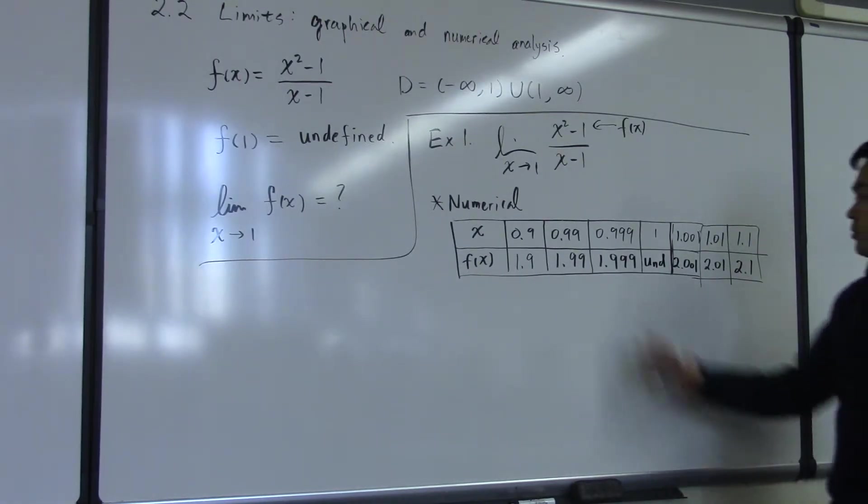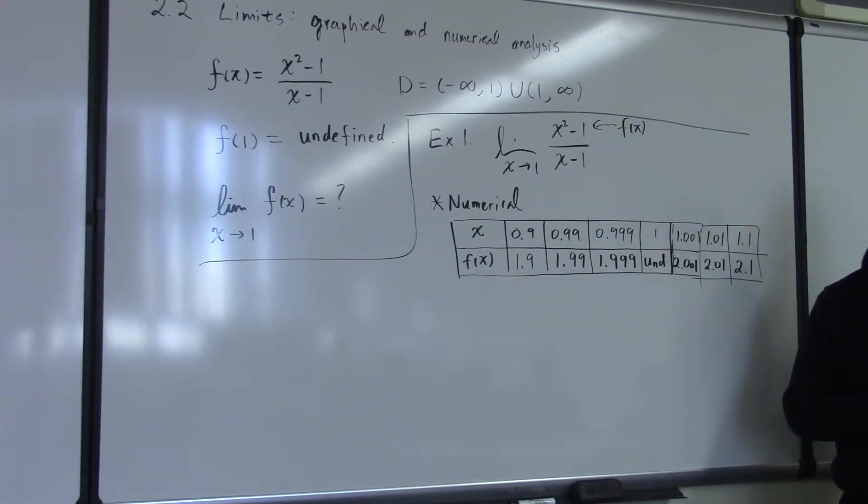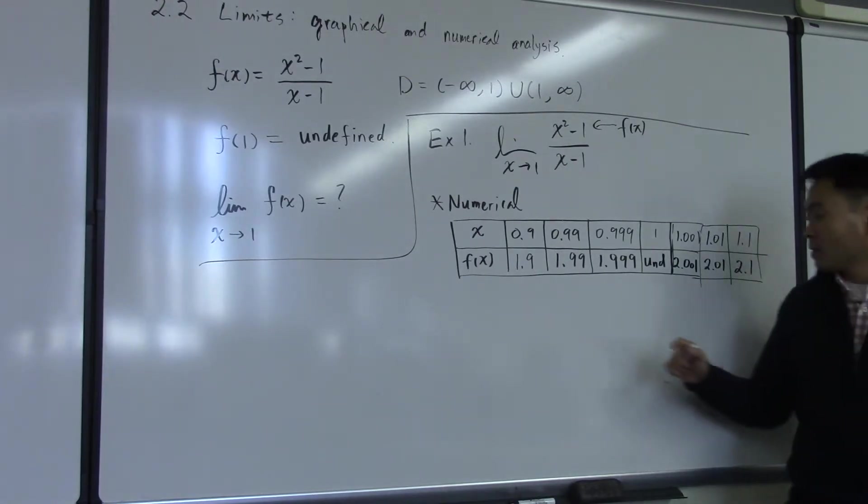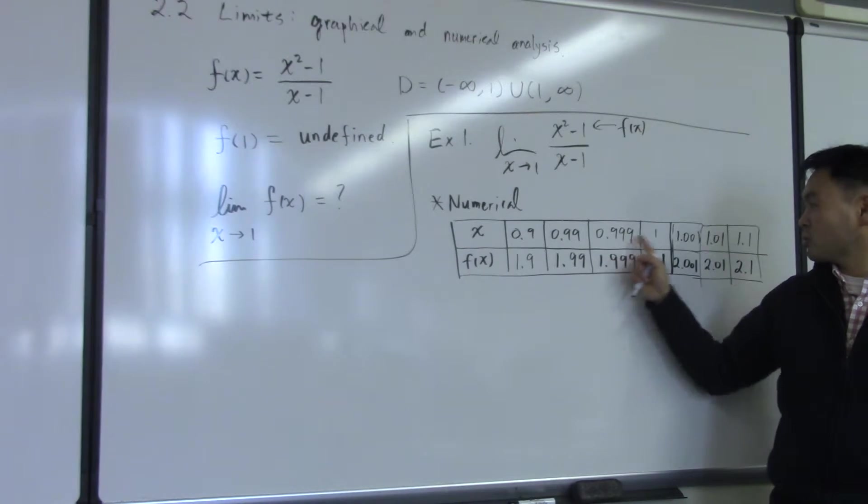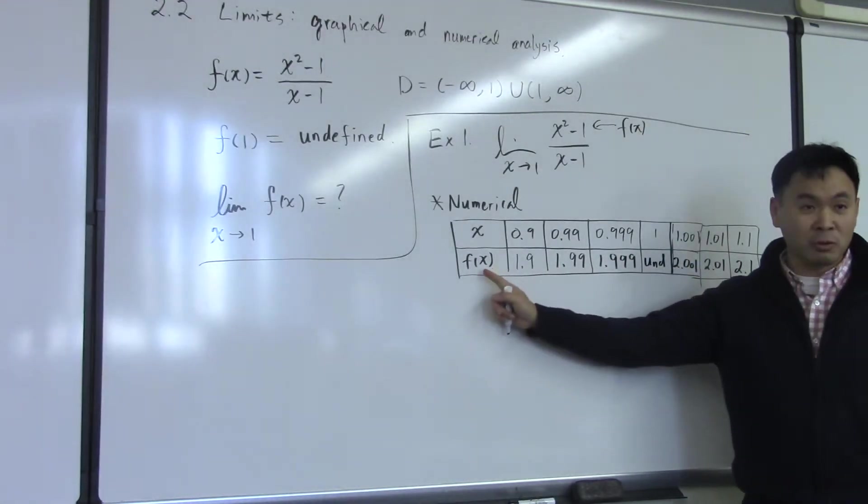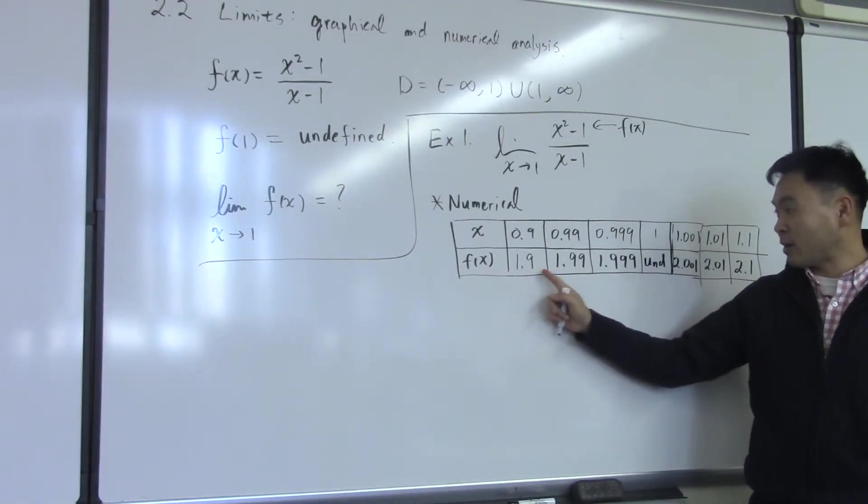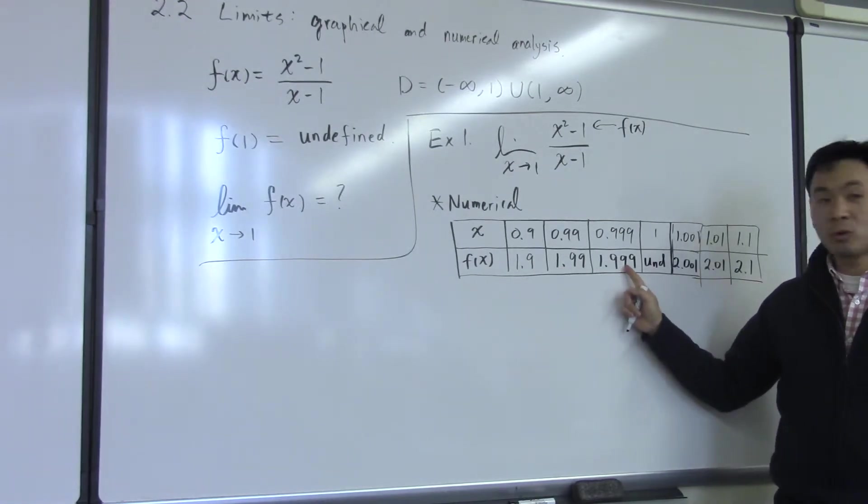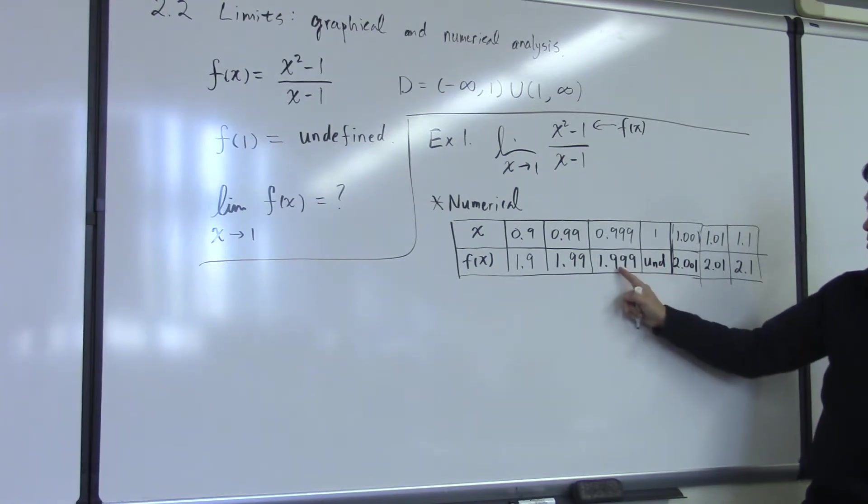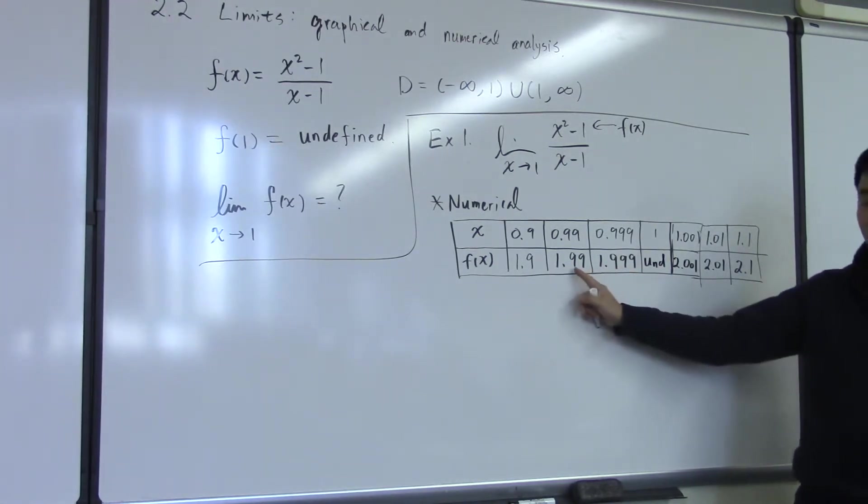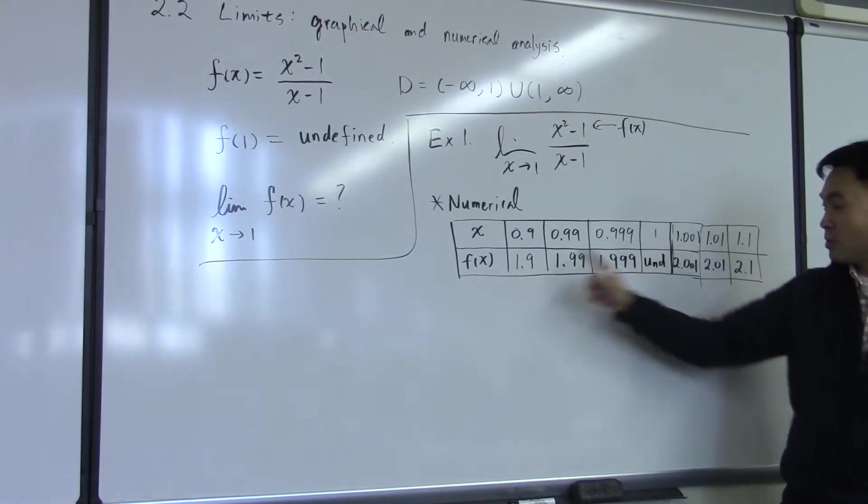After this investigation, you can draw the following conclusion. The more your x value becomes closer and closer to 1, your y value, or the f of x, the value of the function gets closer and closer to what value? 2. Yeah. This is closer to 2 than this one. And this is closer to 2 than this one, right?